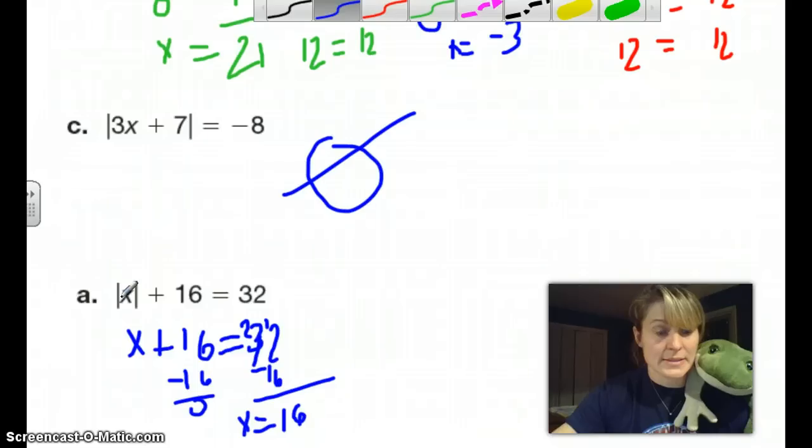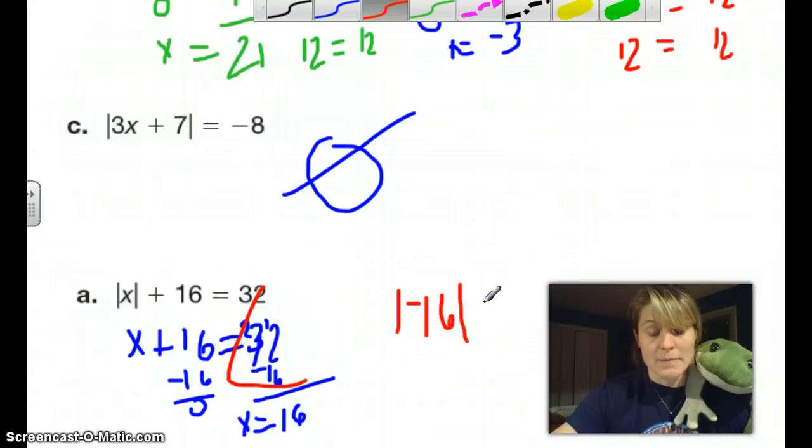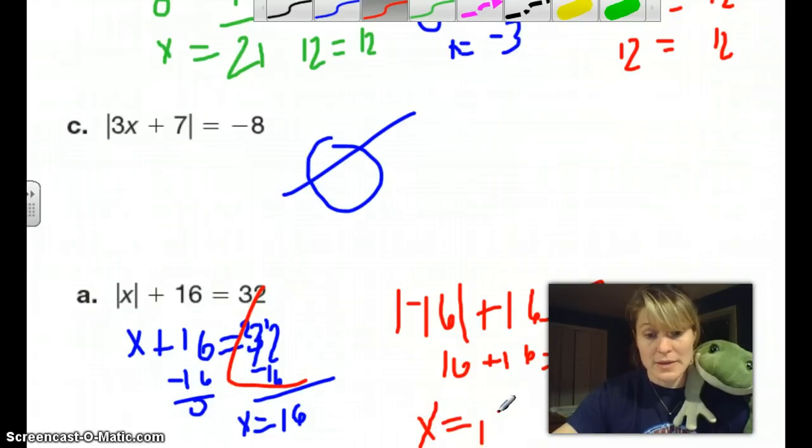That is true. If I plug in 16 here, the absolute value of 16 is 16. 16 plus 16 is 32. Now you could go ahead and do the math, but you might be able to figure this out without it. This is still going to be 16, but it's just going to be the negative of this. If I have the absolute value of negative 16 plus 16, that equals 32. Absolute value of negative 16 is 16, and we just proved that 16 plus 16 is 32. When we have just the x isolated with the absolute value brackets, my two values for x are positive 16 and negative 16.